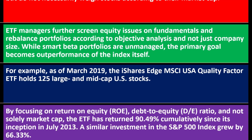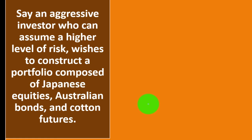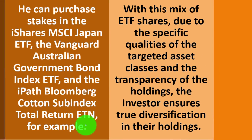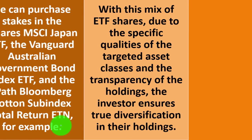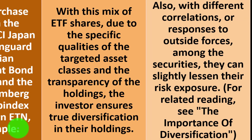Real-world example: say an aggressive investor who can assume a higher level of risk wishes to construct a portfolio composed of Japanese equities, Australian bonds, and cotton futures. They can purchase stakes in the iShares MSCI Japan ETF, the Vanguard Australian Government Bond Index ETF, and the iPath Bloomberg Cotton Subindex Total Return ETF. With this mix of ETF shares — given the specific qualifications of the targeted asset classes and the transparency of the holdings — the investor ensures true diversification. With different correlations among the securities, they can slightly lessen their risk exposure.